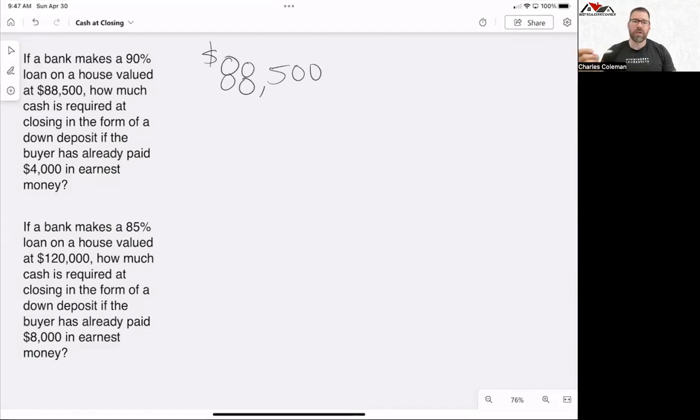The buyer is responsible for 10%, right? The bank is bringing 90% to the table. So the buyer is responsible for 10%, so we're going to multiply that by 0.1. And keep in mind on the PSI real estate exam, you're going to have to be able to turn percentages into decimals because the calculator will not do that for you. It does not have a percentage button.